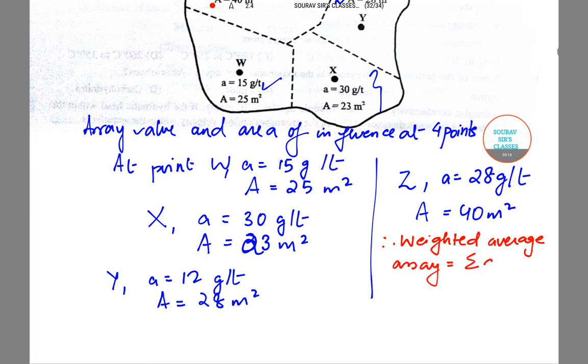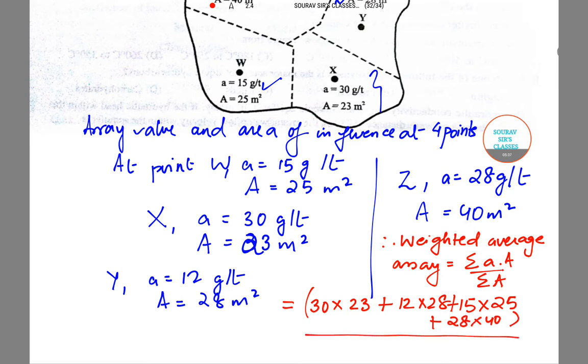The weighted average assay is given by summation a·A divided by summation A. Substituting the values: (30×23 + 12×28 + 15×25 + 28×40) divided by (23 + 28 + 25 + 40). This becomes 2521 divided by 116, and the answer is 27.7 g/L.